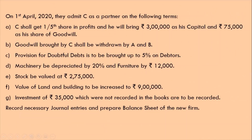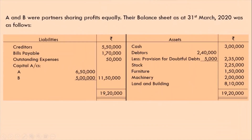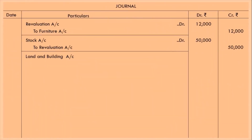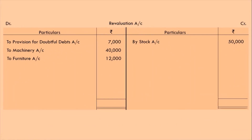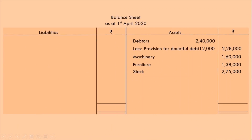Next: value of land and building to be increased to Rs 9 lakh. Current value is Rs 8,10,000, so we have to increase it by Rs 90,000. Journal entry: land and building account debit Rs 90,000, to revaluation Rs 90,000. In revaluation account, as value of asset is increasing, it gives us gain — all incomes and gains are credited — so by land and building on credit side Rs 90,000. In balance sheet, record land and building at Rs 9 lakh.